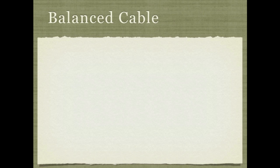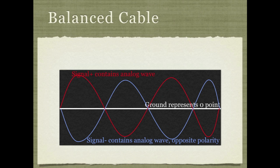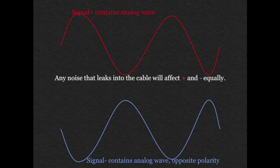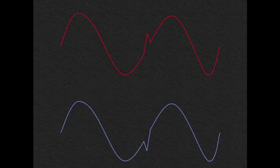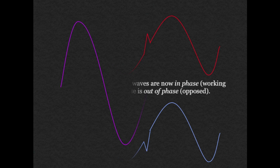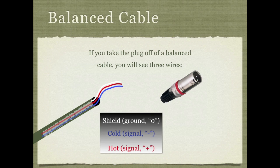A balanced cable uses three conductors. It has the same ground and the same hot or signal wire, but it also contains an additional copy of the signal run out of polarity. When that cable encounters electrical interference, the interference affects both the positive and negative copies of the signal equally. At the receiving end, the input inverts the polarity of the negative signal, mixes them together, and we end up cancelling out the interference while doubling the signal. If you look at a balanced cable, you'll see three wires: the shield (same as in an unbalanced cable), and then two signal wires — one for the negative (sometimes called cold) and one for the positive (called hot).